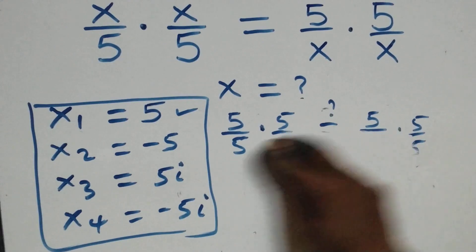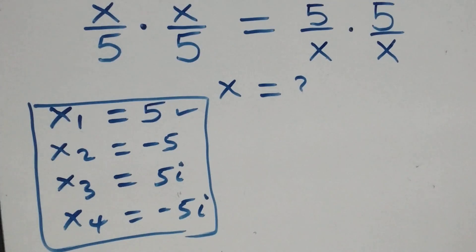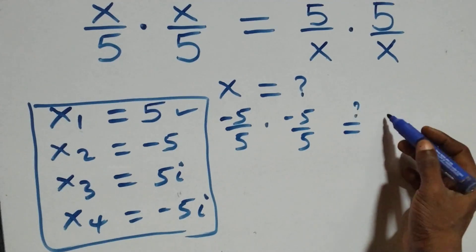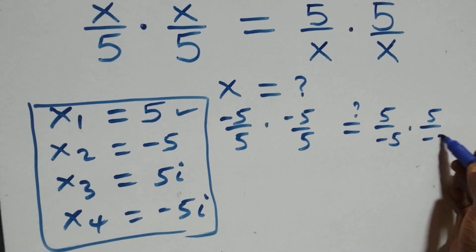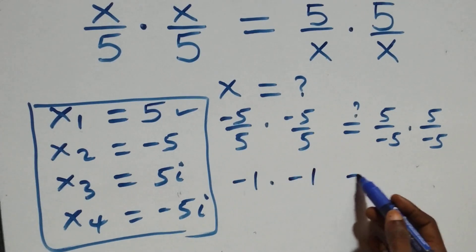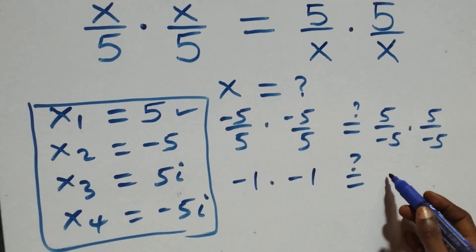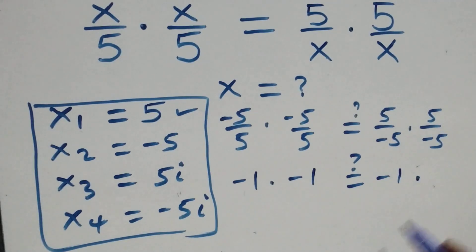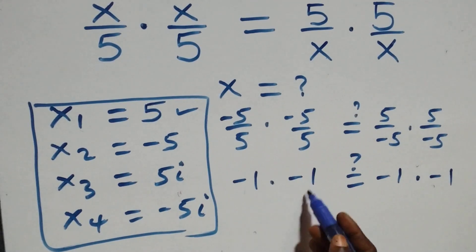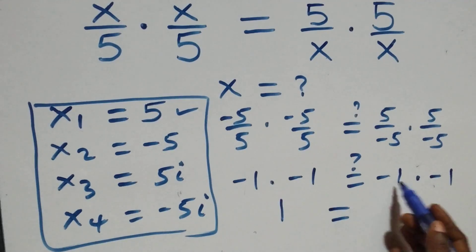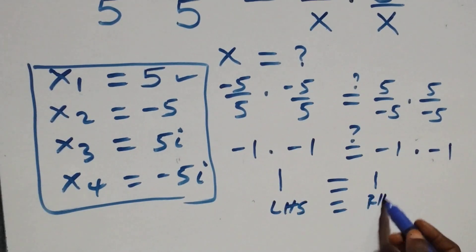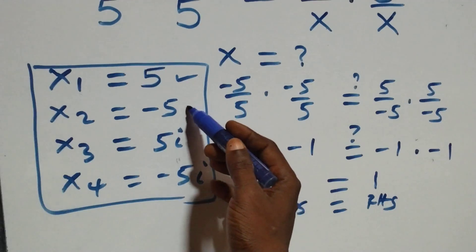Also, substituting x = −5: we get (−5/5)(−5/5) equals (5/−5)(5/−5). This gives (−1)(−1) equals (−1)(−1), that is +1 equals +1. Hence left-hand side equals right-hand side, and therefore x equals −5 also satisfies the given problem.